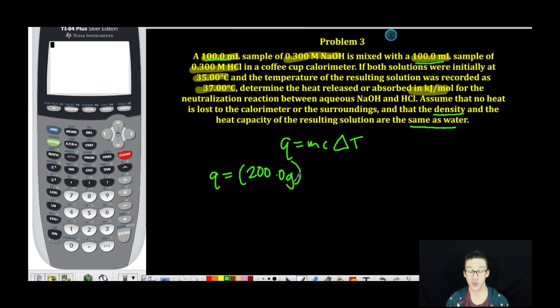We're also making the assumption that the specific heat or heat capacity is the same as water, which is 4.18 joules per gram degree Celsius. My final temperature of 37.00 degrees Celsius minus my initial temperature of 35.00 degrees Celsius. In other words, my temperature change is 2.00 degrees Celsius.